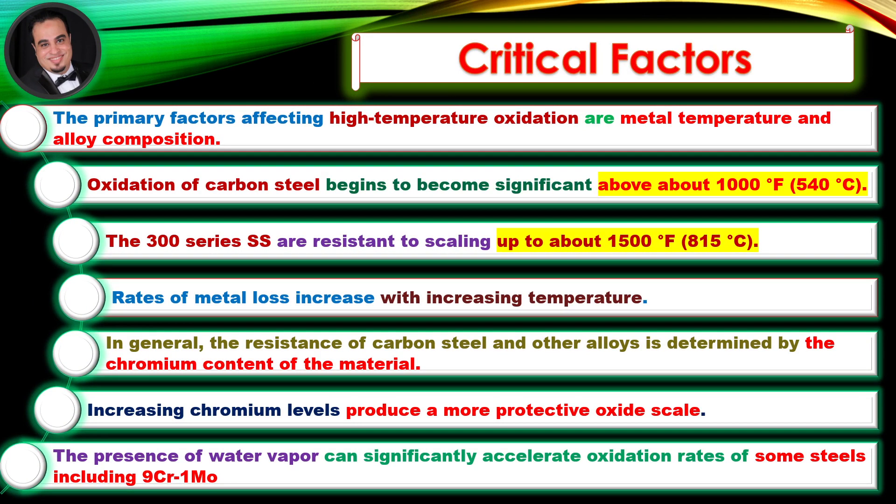The primary factors affecting high-temperature oxidation are metal temperature and alloy composition. Oxidation of carbon steel begins to become significant above about 1,000 degrees Fahrenheit. The 300-series stainless steels are resistant to scaling up to about 1,500 degrees Fahrenheit. Rates of metal loss increase with increasing temperature.